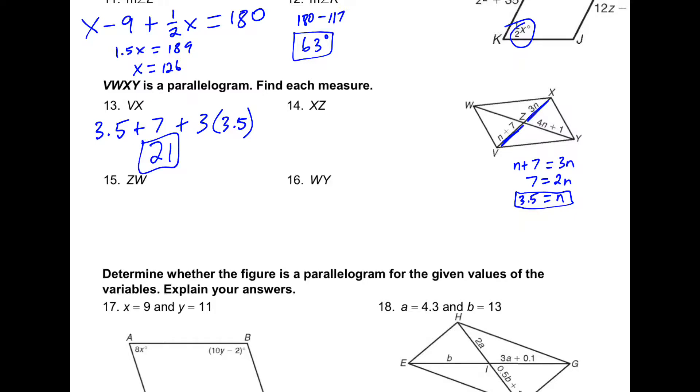And for xz, if we multiply 3.5 times 3, we get 10 and a half. Zw is the same thing as zy, so we can plug in 3.5 into this equation and we get 15. We double that for wy, and we get 30.